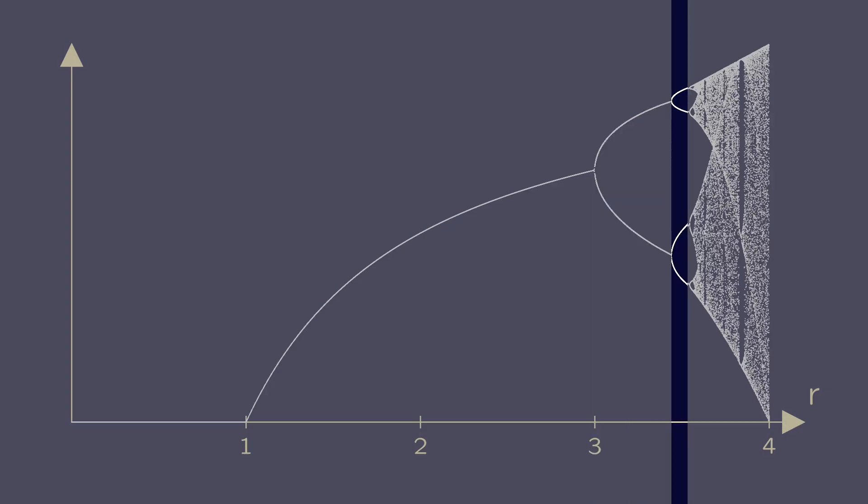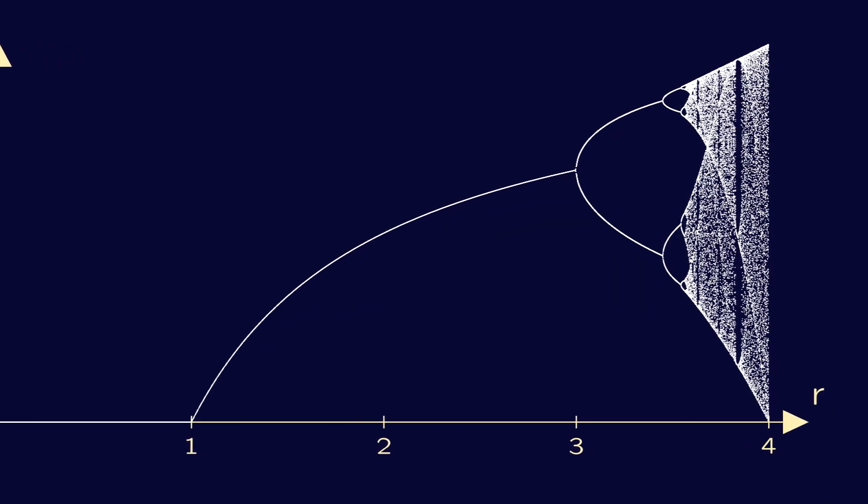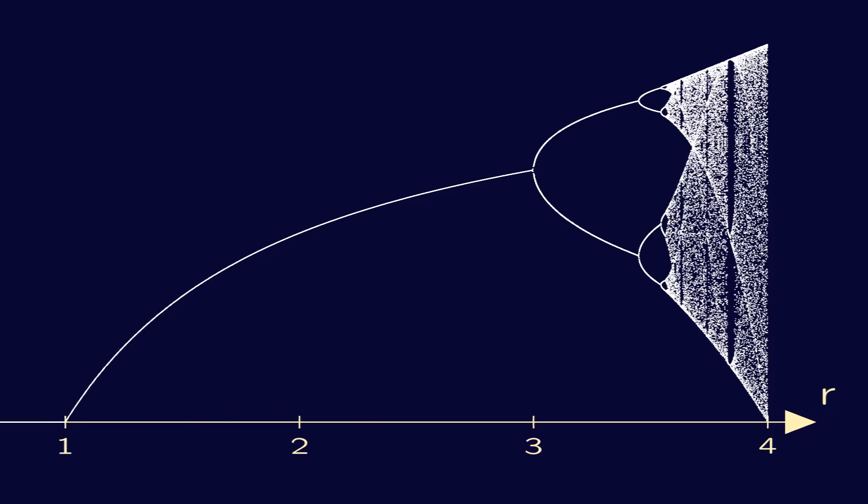If there are four points, the solution settles into a four-periodic pattern. And so on. And if there are many points scattered all over the place, then the solution is chaotic. This gives a visual representation of how the behavior changes at certain values of r.